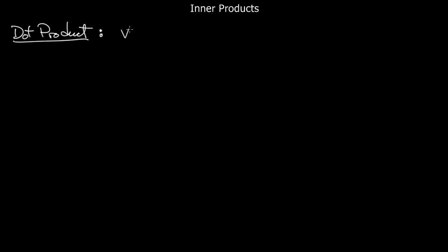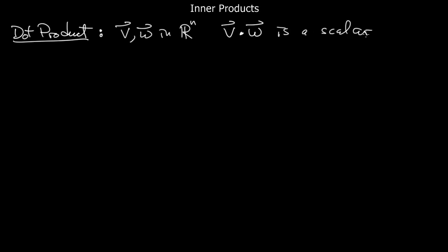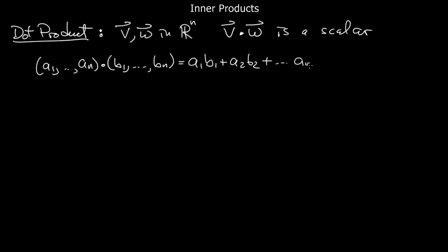We turn now to a new topic, which is that of inner products. The prototype here is the usual dot product on Rn. If you have two vectors in Rn, we know how to take their dot product, and what we get is a scalar. It's a product of two vectors and the output is a scalar, defined by a1 through an dotted with b1 through bn as a1b1 plus a2b2 plus dot dot dot anbn — the usual dot product, and that's a number.